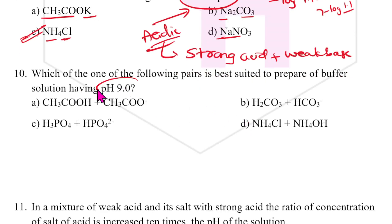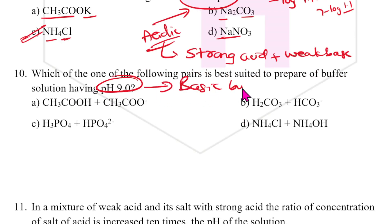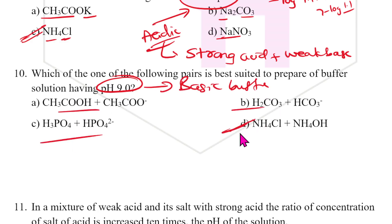Which pair is best suited to prepare a buffer solution having pH 9? pH 9 means a basic buffer is required. The answer is D.